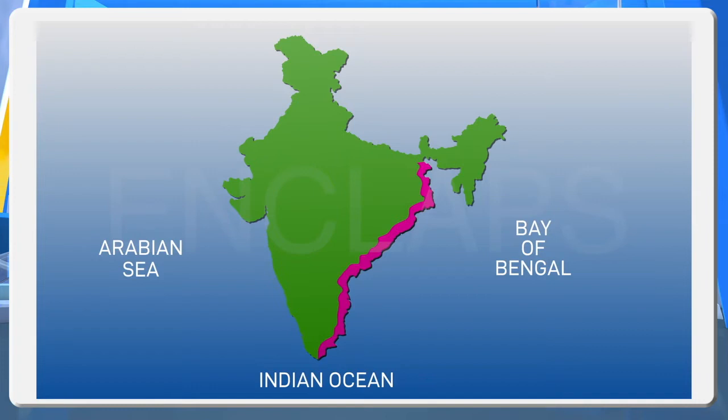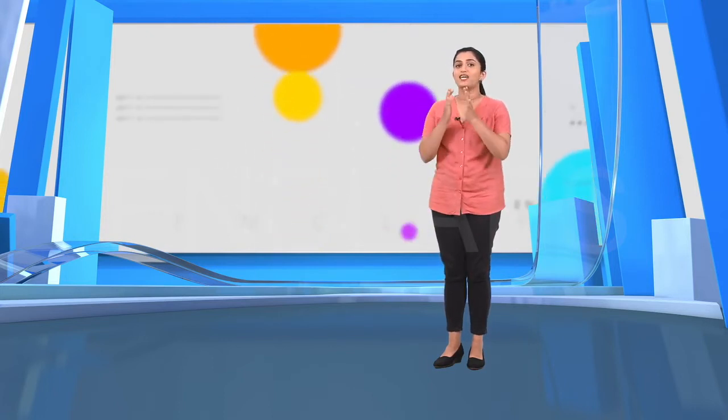This is the Eastern coastal plain. It is the area between the Bay of Bengal and the Eastern Ghats. The Eastern coastal plain is comparatively wider than the Western coastal plain. Uttara Sircars is the northernmost part and the Coromandel coastal plain is the southernmost part of the Eastern coastal plain.